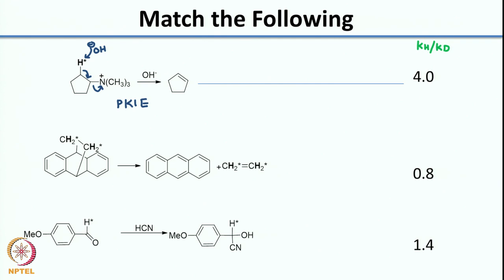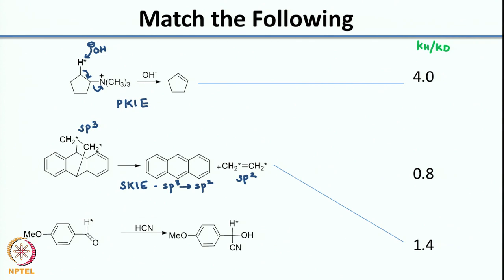Now let us look at the second and third reactions. In the second reaction, is the CH bond broken? The CH bond is not broken, so you know that it is a secondary kinetic isotope effect. You need to look at the change in hybridization. The hybridization here is sp3, and what is the hybridization in your product? It is sp2. The change that you have is sp3 to sp2, which is a normal secondary kinetic isotope effect, so the value would be greater than 1 and the correct answer would be 1.4.